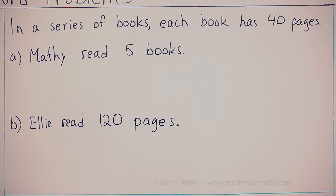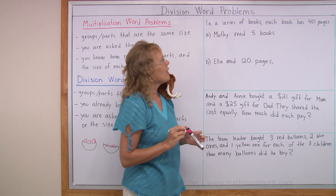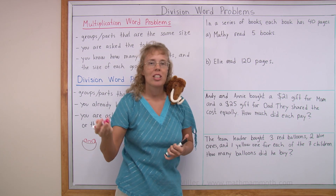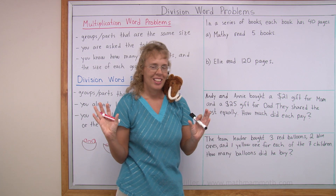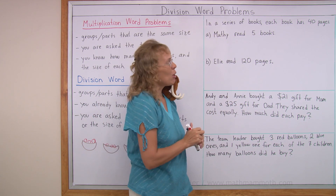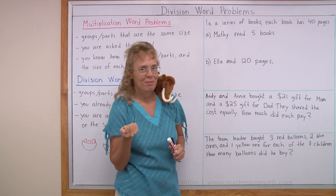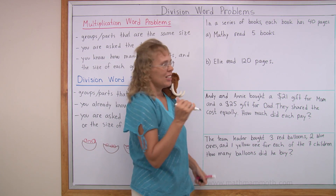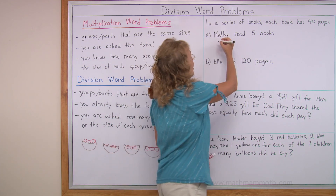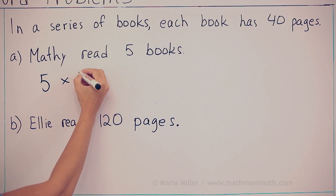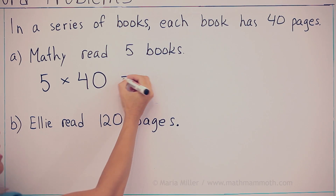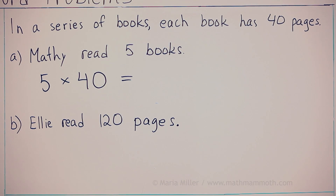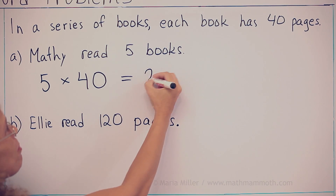We could ask how many pages did he read in total? And how would you solve it? You would write a multiplication — five books times 40 pages in each book. Adding 40 five times, you should get 200 pages.